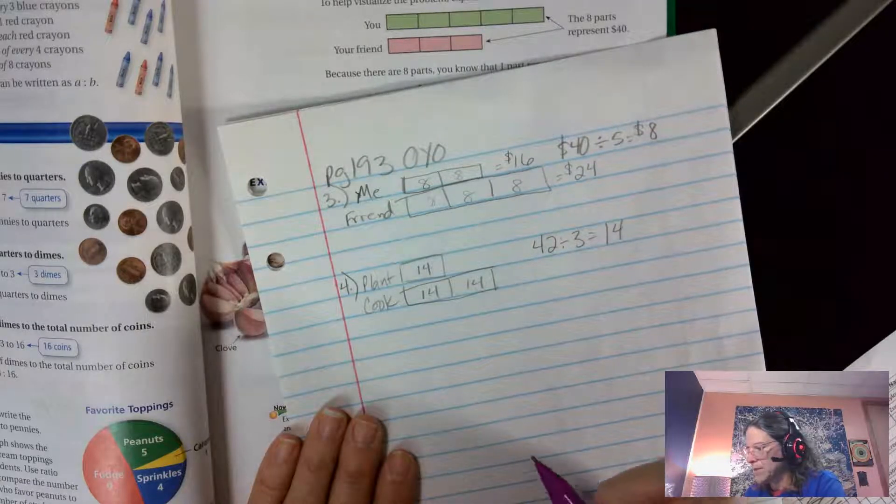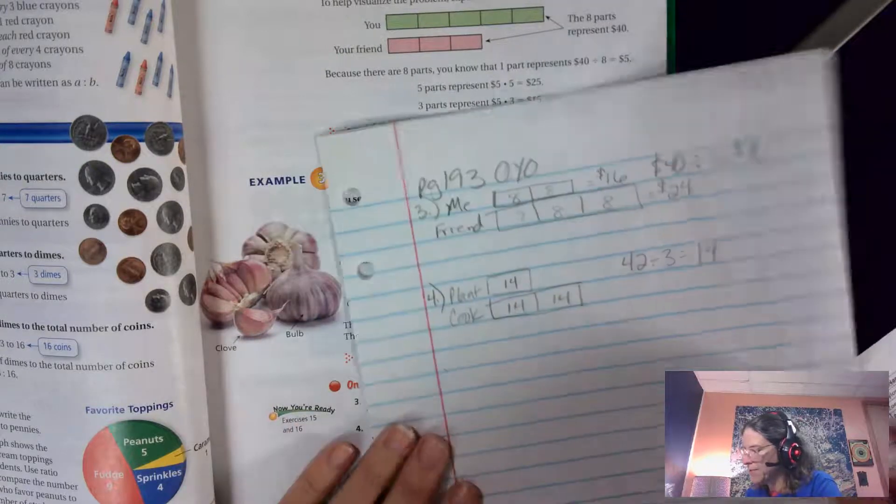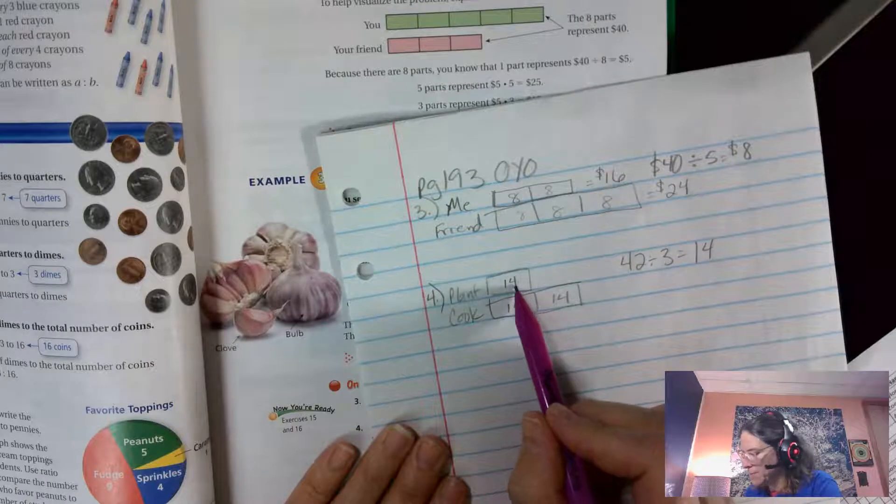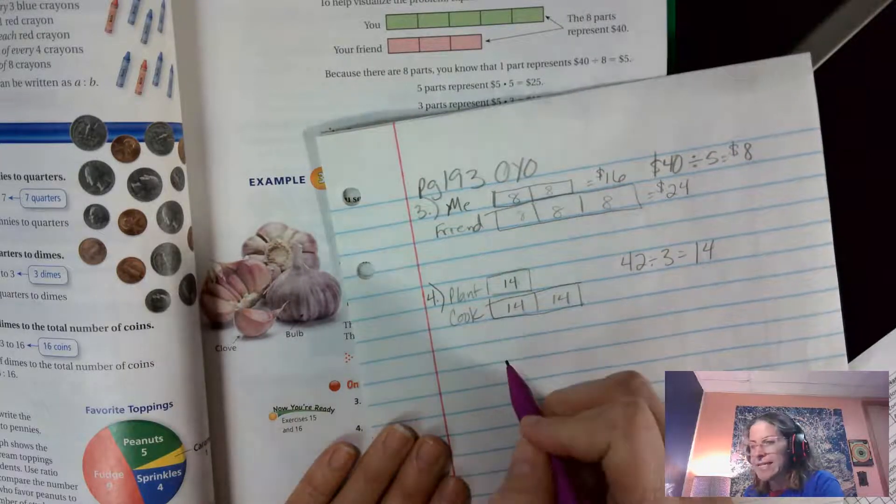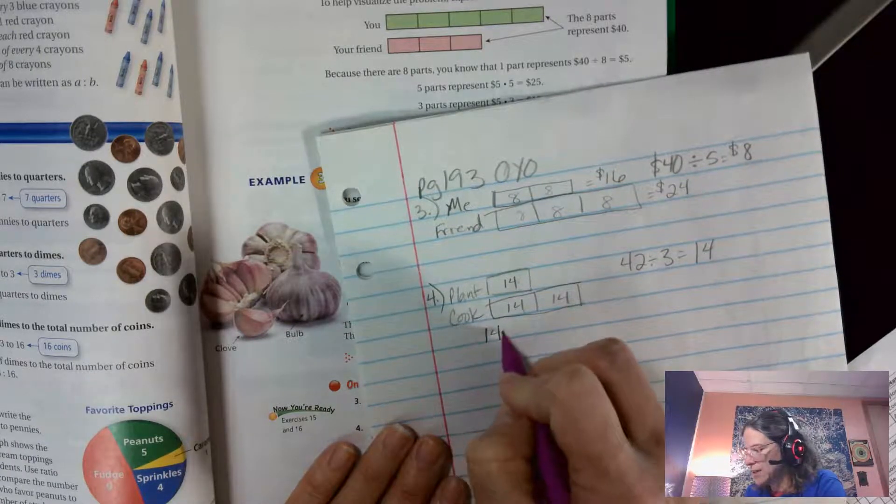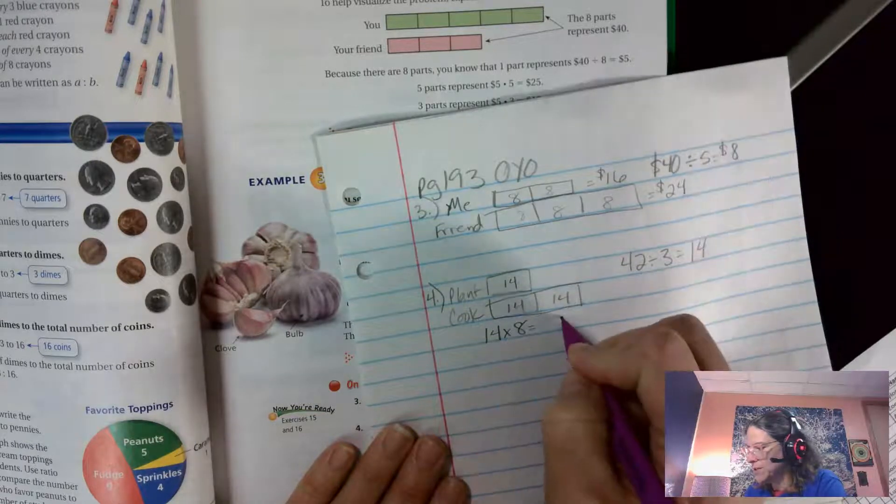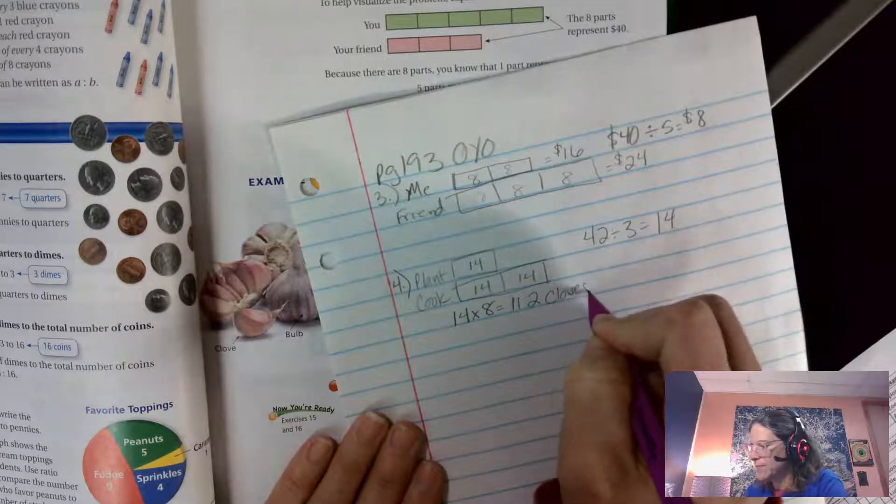Okay, so then I need to find out if from these 14 bulbs, how many cloves am I going to plant? Remember there's eight cloves in a bulb, so 14 times 8. Eight times 4 is 32, carry the 3. Eight times 1 is 8, plus 3 is 11. 112 cloves. Is that my answer? No.